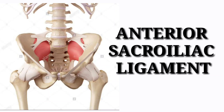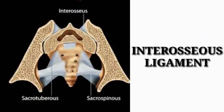The anterior SI ligament is a thickening of the anterior and inferior parts of the capsule and it runs horizontally. The interosseous ligament is a strong ligament located posteriorly along the posterior and superior margin of the joint, forming a strong connection between the sacrum and ilium.